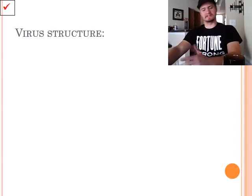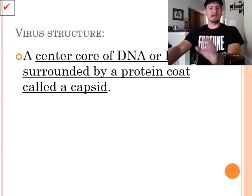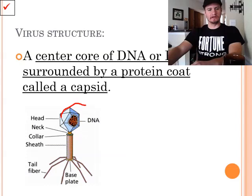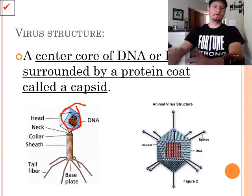So the virus structure. As you can see, viruses have a very unique structure that sets them apart from others. There's a center core of DNA surrounded by a protein coat called a capsid. So the capsid would be right here, which contains the DNA.